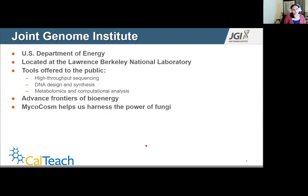So the Joint Genome Institute, abbreviated as JGI, is part of the Department of Energy and is located at the Lawrence Berkeley National Laboratory. JGI offers numerous tools such as high throughput sequencing, DNA design and synthesis, computational analysis, as well as, if you sequence some DNA, you might want to look at it. And so JGI does it all.